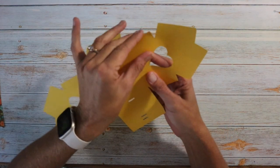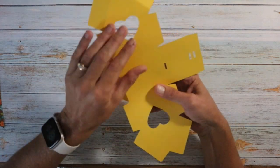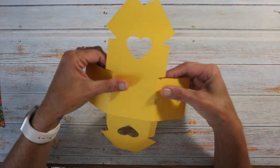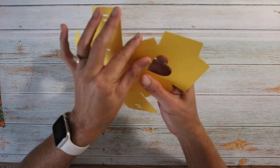Go ahead and just press on all the score marks. Then we'll go back in with our bone folder to give them a better crease. This is such a cute little box.